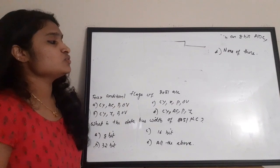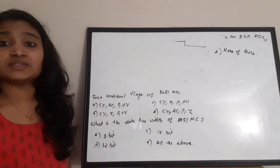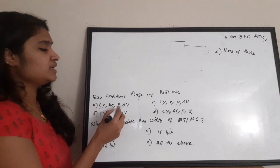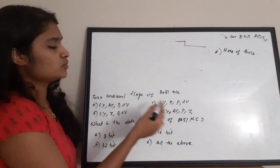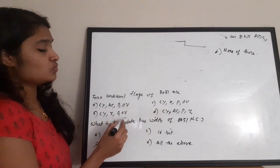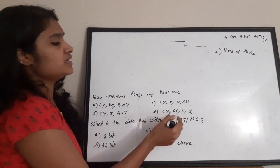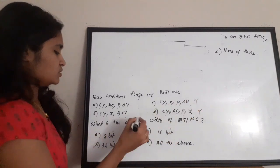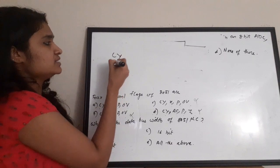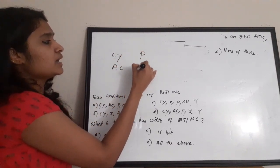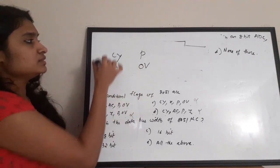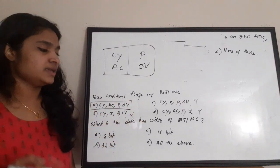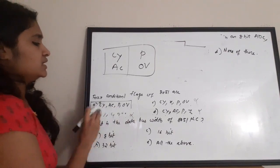Next question: the four conditional flags of 8051 are — A) CY, AC, P, OV. CY is carry, AC is auxiliary carry, P is parity, and OV is overflow. Options B, C, and D include 'Z' (zero flag), which is not an actual flag in 8051. The correct answer is option A: CY, AC, P, and OV.